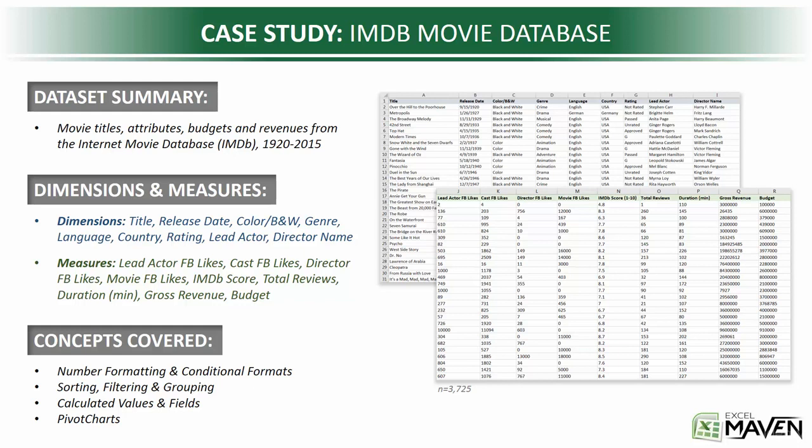We'll be looking at a cut of the IMDB data for the first several sections, which gives us movie titles, attributes, budgets, and revenues from 1920 to 2015.